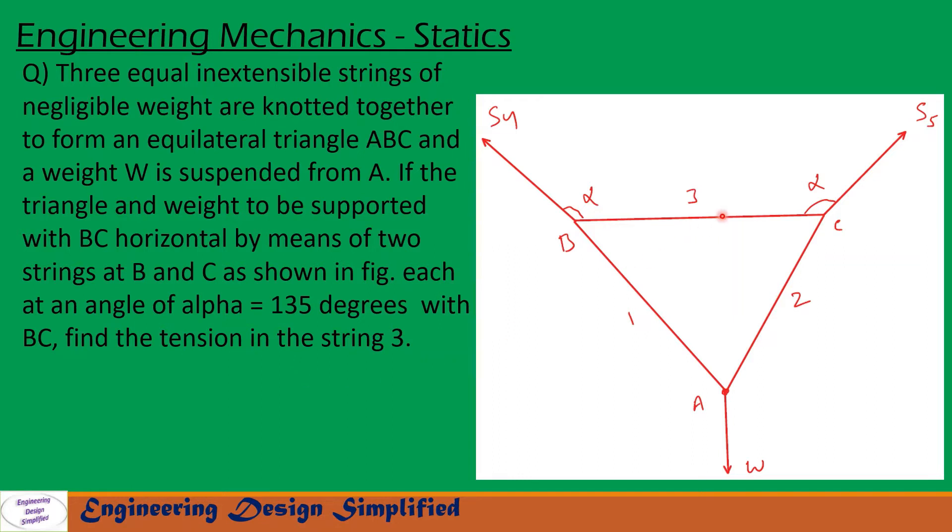In today's problem, three equal inextensible strings tied together to form an equilateral triangle ABC and weight W is attached at A, acting downwards. And to keep the string BC horizontal, two forces S4 and S5 are acting as shown in figure. Angle between horizontal, this string 3 and this S4 is α. Similarly, this is also α. α is given 135 degrees. So in this condition, we need to find what is the tension in this string 3. Let us see in the coming slides how to solve this problem.